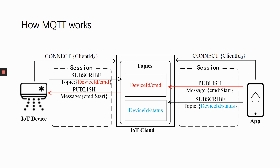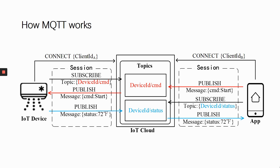Similarly, if the app wants to receive messages from the device, it subscribes to the topic device ID slash status. The cloud will forward the device information to the app based on the topic — for example, the room temperature.